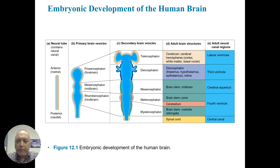In development, the secondary structures develop from the prosencephalon. This will be the telencephalon and the diencephalon. The telencephalon will eventually form the cerebrum, the cortex, white matter, and basal nuclei, as well as the lateral ventricles. The diencephalon will form the thalamus, hypothalamus, epithalamus, retina, and the third ventricle. The mesencephalon will form the brainstem and the midbrain, as well as the cerebral aqueduct. The metencephalon will make the pons, cerebellum, and fourth ventricle, along with the myelencephalon, which creates the medulla oblongata and the fourth ventricle.